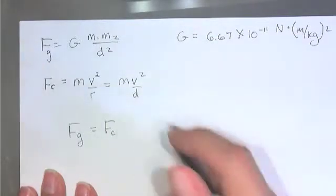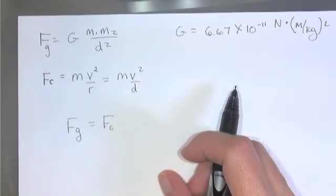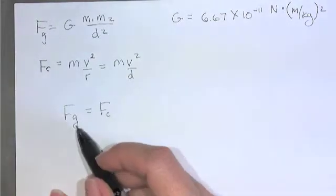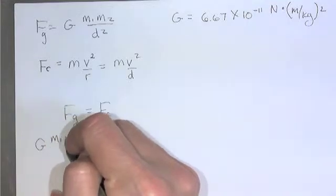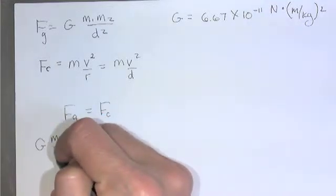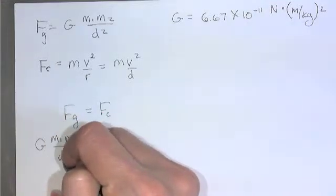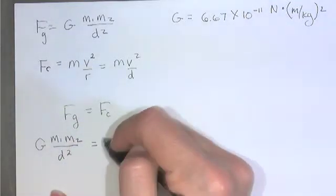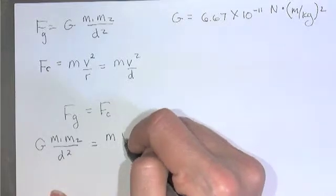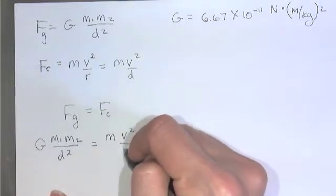And I'm just going to substitute the equations: Gm1m2 over d squared equals mv squared over d.